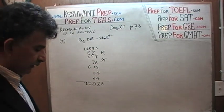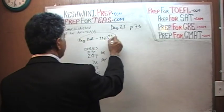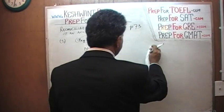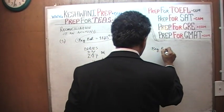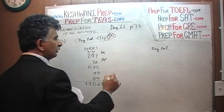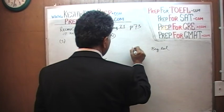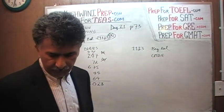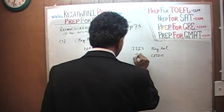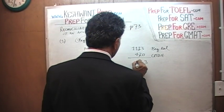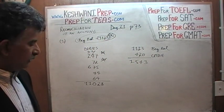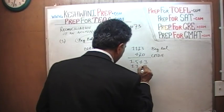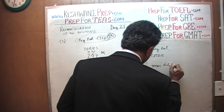Now let's take care of the credits side. Always remember to start with the beginning balance. We are told it is $1,123.42 — I'm going to ignore the 42 cents, so let's say $1,123. Then we have one deposit we made in the amount of $420. That gives us a subtotal of $1,543. Then we just subtract all the checks we wrote — the total debits of $1,102.